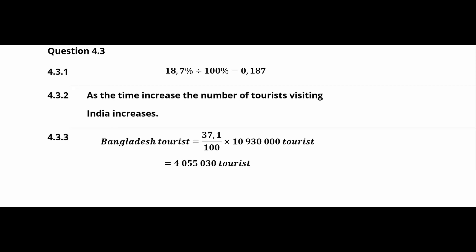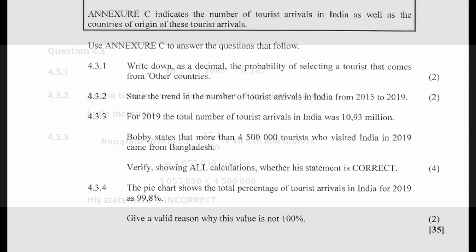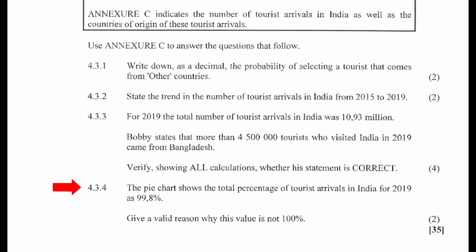This gives us a value of 4,055,030 tourists. Since the actual number of 4,055,030 is less than Bobby's statement of more than 4,500,000, we can conclude that the statement is incorrect.